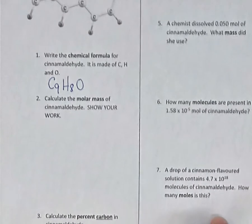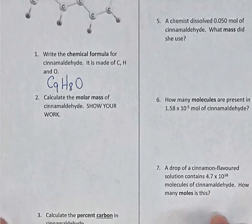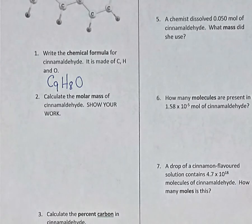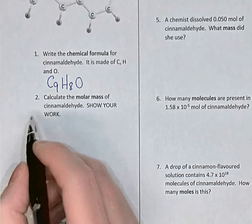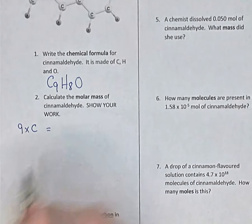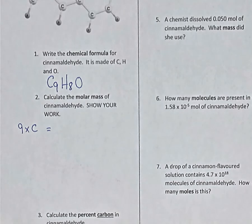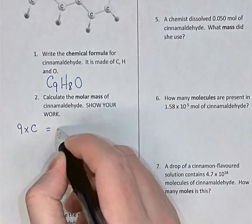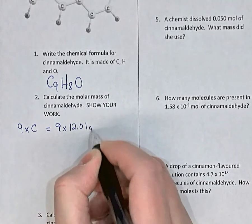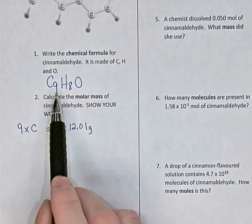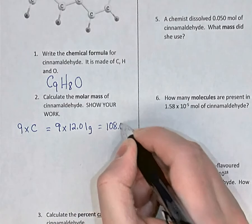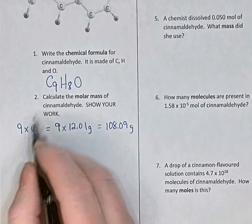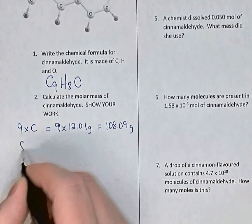The next question says calculate the molar mass and show your work. The molar mass is the mass of one mole of cinnamaldehyde. In the molecular formula we have nine carbons, so nine times the molar mass of carbon from the periodic table: 12.01 grams. Nine times 12.01 gives 108.09 grams of carbon within one mole of cinnamaldehyde.